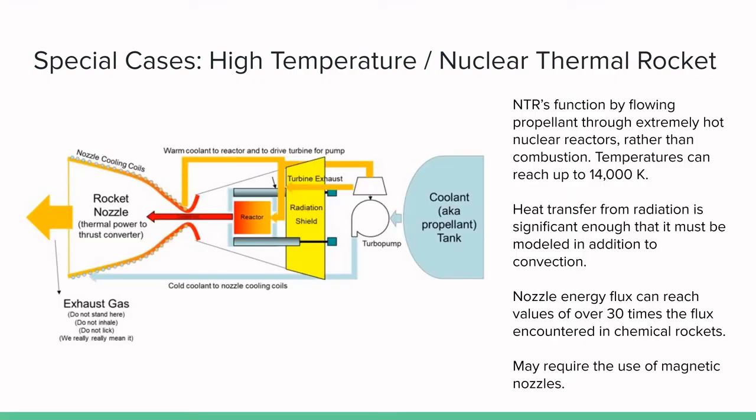Unlike traditional rockets, NTRs flow their propellant into nuclear reactors that can reach up to 14,000 Kelvin. In addition, radiation must be considered with convection in the heat transfer due to the extremely high temperatures the gases will reach once they pass through the nuclear reactor.